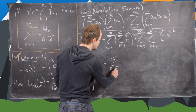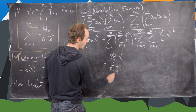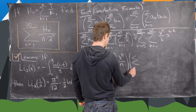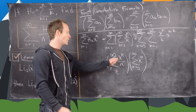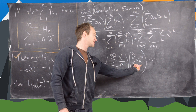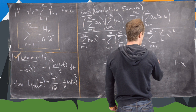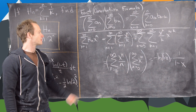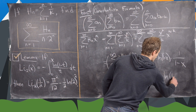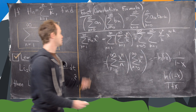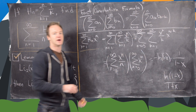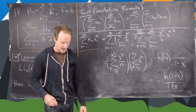The two sums factor as: the sum n=1 to infinity of x^n/n — the antiderivative of the geometric series, equal to minus ln(1−x) — times the sum n=0 to infinity of x^n — the geometric series, equal to 1/(1−x). So the generating function for the harmonic numbers is minus ln(1−x) over (1−x).